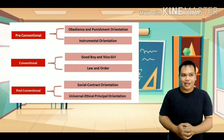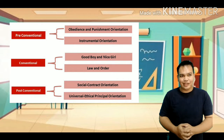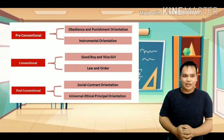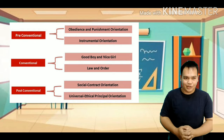During the conventional level, an individual's sense of morality is tied to personal and societal relationships. Children continue to accept the rules of authority figures, but this is because they believe it is necessary to ensure positive relationships and societal order.